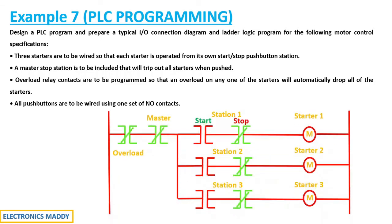Similarly, the process repeats for station two. Pressing the start push button of station two causes current to flow through that path and starter two is also turned on. Even if starter one is pressed, starter one of station one will turn on independently — each station operates its own starter. Now with station two's starter running, let's look at how the overload and master contacts operate.